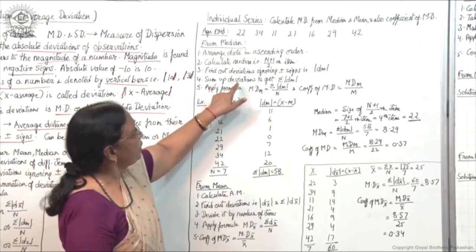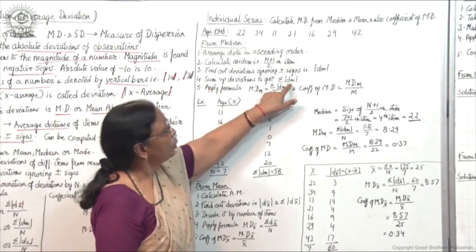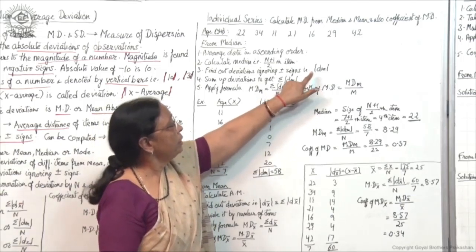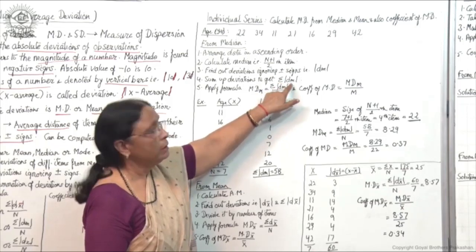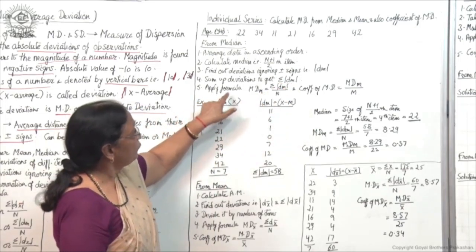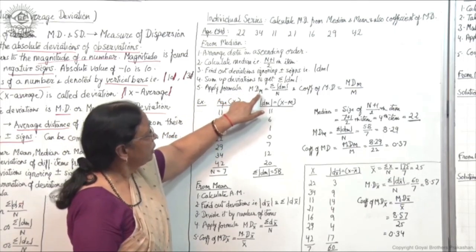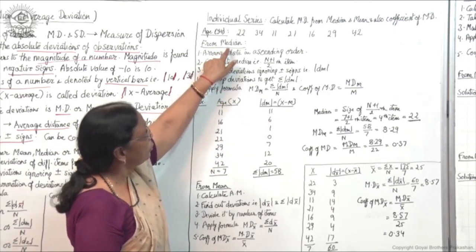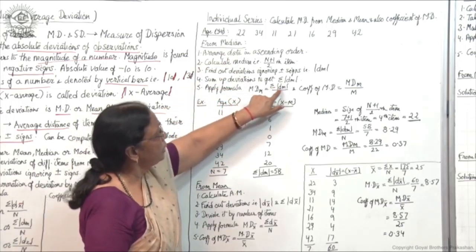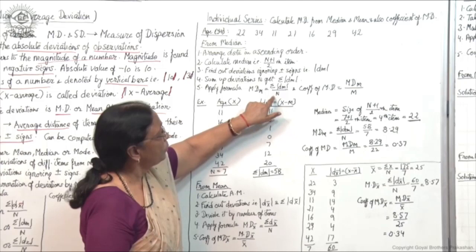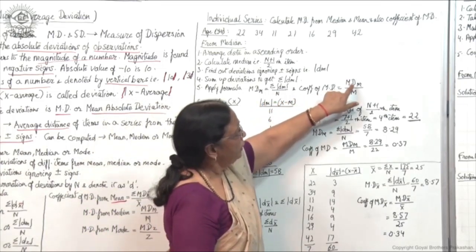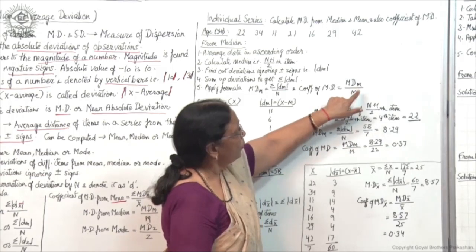Step four: sum up deviations to get σ|dm|. Step five: apply formula MD(M) = σ|dm| / n. And the coefficient of MD is mean deviation from median divided by median.